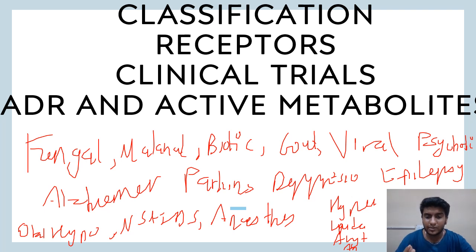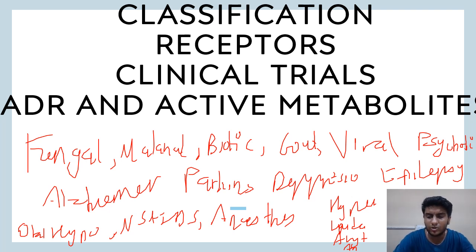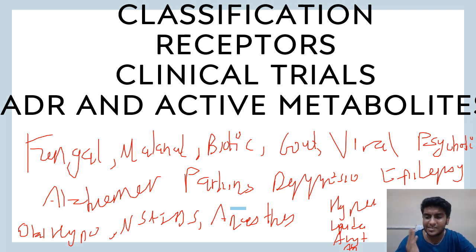For general anesthetics, important agents include ketamine, propofol, and ultra-short-acting barbiturates. For NSAIDs: paracetamol, non-selective COX inhibitors, selective COX-2 inhibitors, and preferential COX-2 inhibitors. For oral hypoglycemics: DPP-4 inhibitors, SGLT-2 inhibitors, GLP-1 agonists, metformin and biguanides, thiazolidinediones. For antihypertensives: ACE inhibitors, angiotensin receptor blockers, calcium channel blockers. For lipid-lowering: statins, fibrates, bile acid sequestrants. For arrhythmia: sodium channel blockers, potassium channel blockers, beta-blockers.